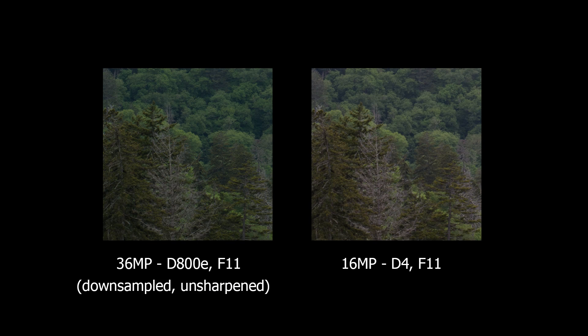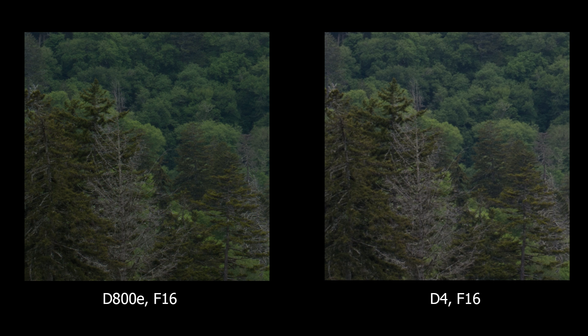Just for fun, let's try it the other way — down-sample the D800E file to D4 size and compare. Despite both now being 16 megapixels, the D800E file is still showing a bit more detail. At f/16, the D4 is just starting to see diffraction but the D800E is two solid stops into it. Side by side with the D4 enlarged to D800E size, there is significantly more detail in the D800E file despite the diffraction. Running the sharpen filter equally on both, sharpening pulled out quite a bit more detail from the D800E file since the extra detail and information just isn't there in the D4. No matter how you cut it, you get more detail from higher-res sensors, so don't let diffraction fears keep you away from them.